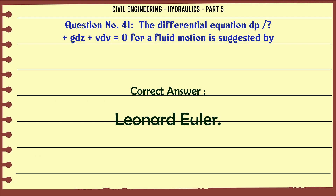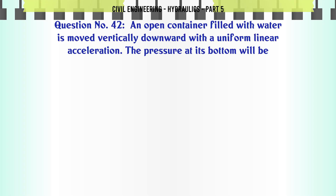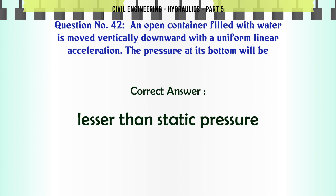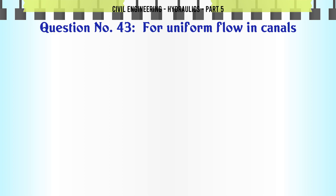An open container filled with water is moved vertically downward with a uniform linear acceleration. The pressure at its bottom will be: A. greater than static pressure, B. equal to static pressure, C. lesser than static pressure, D. none of these. The correct answer is lesser than static pressure.